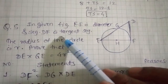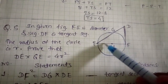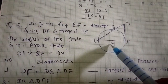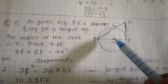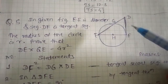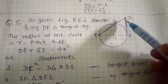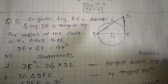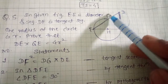Example number five. In the given figure, EF is the diameter and DF is the tangent segment. The radius of the circle is r. We have to prove that DE × GE = 4r².